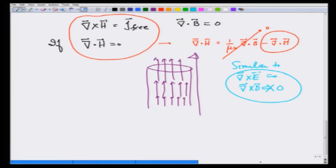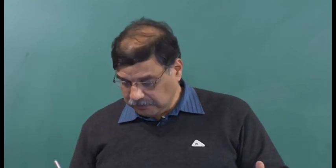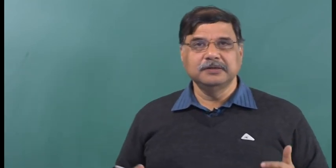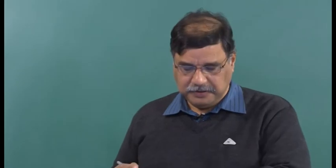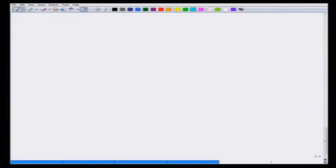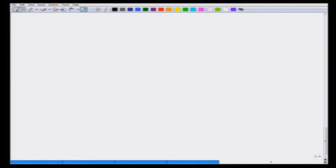Before we end this lecture, I want to give you a feeling for how the bound currents arise out of magnetic moments or how we can interpret them. Recall that we had j_bound which was curl of magnetic moment and surface current which was minus n cross M.